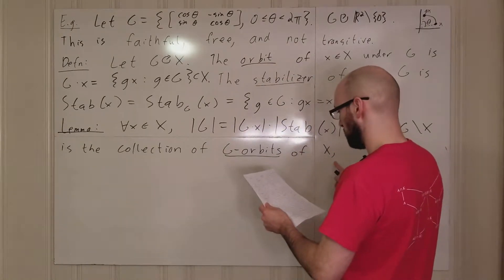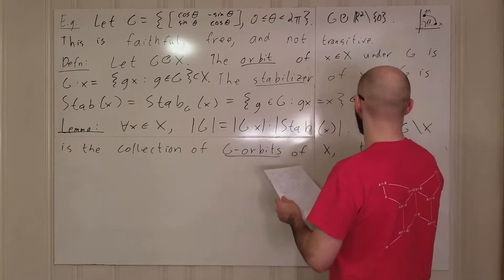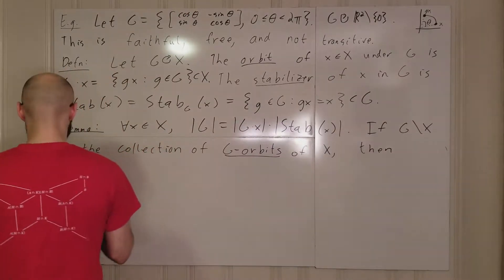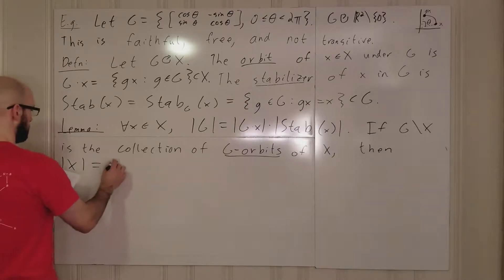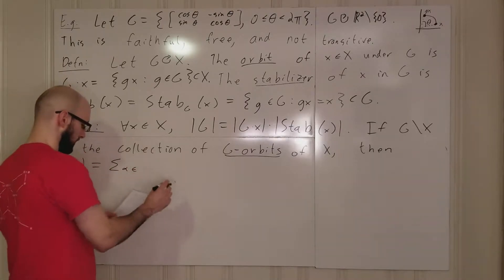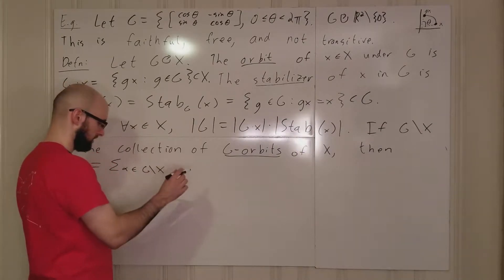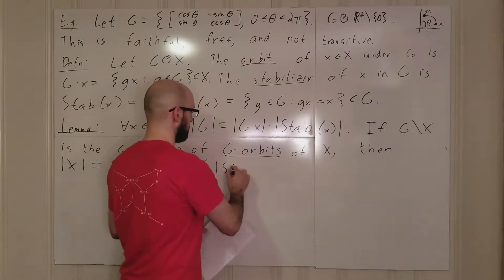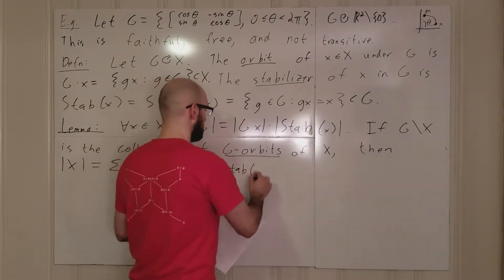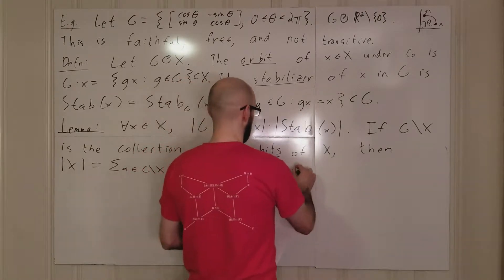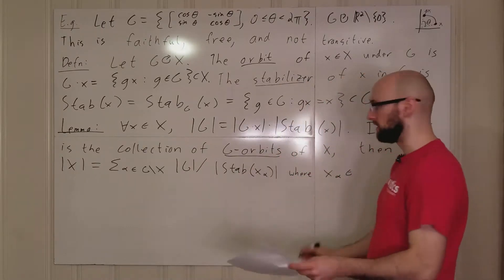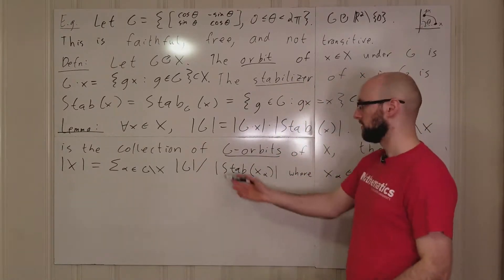So, the g orbits of x. The order of x is equal to the sum over all alpha in g mod x of the order of g divided by the order of the stabilizer in g of x alpha.